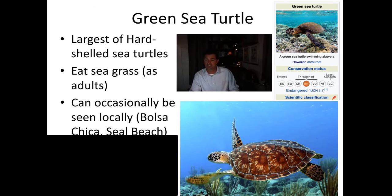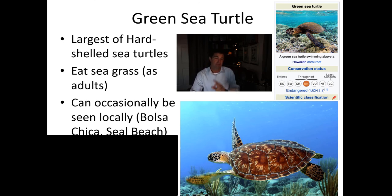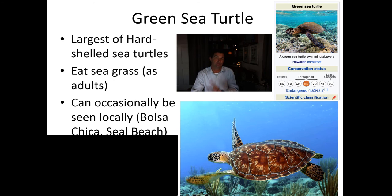The next sea turtle is the green sea turtle — this is the largest of the hard-shelled turtles. They eat seagrass as adults, although as juveniles they eat invertebrates. They can occasionally be seen locally here in Southern California. At Bolsa Chica wetlands or in the local city of Seal Beach, there are a couple of locations where sea turtles are commonly spotted.